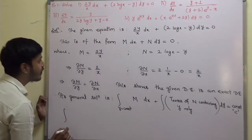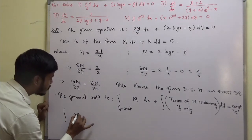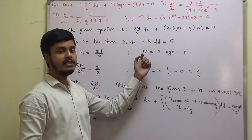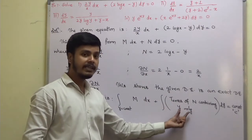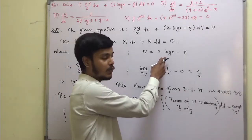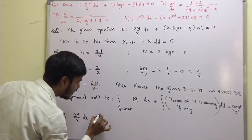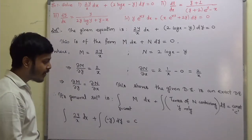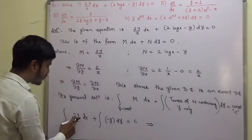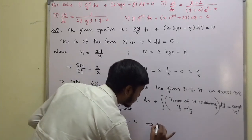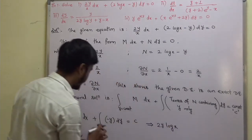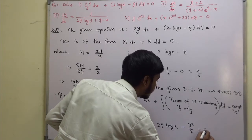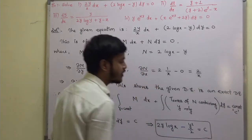Integration of M dx: that is ∫(2y/x)dx keeping y constant. Now looking at N = 2 log x − y, the term containing y only is −y. So we also add ∫(−y)dy = c. Integrating: 2y · log x − y²/2 = c. This is the solution to the given problem.